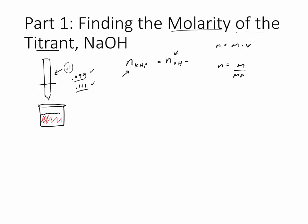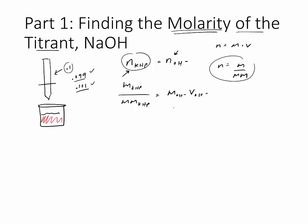We don't have moles of KHP directly — what we have is the mass from weighing it, and the molar mass. So moles equals mass over molar mass. We substitute that in, giving us: mass of KHP over molar mass of KHP equals the molarity of OH⁻ times the volume of OH⁻. Solving for molarity: molarity of OH⁻ equals mass of KHP divided by molar mass of KHP times volume of OH⁻. The mass is from your data — it's weighed.